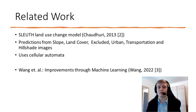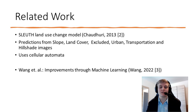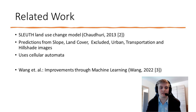There is also already a lot of work on land use prediction. The current state-of-the-art model would be Sloith, which uses slope, land cover, excluded, orban, transportation and hillshade images, puts them into a cellular automata algorithm, and generates land use predictions from there. However, our application strives to simplify this by only considering the land use and its change and using a direct machine learning algorithm. This is inspired by a paper from Wang and colleagues published in 2022, which surveys current land use prediction methods and concludes that machine learning may be the future of the field.